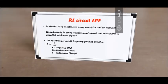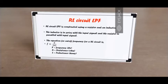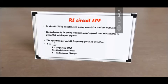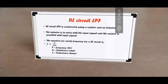An inductive low-pass filter is constructed using a resistor and an inductor. The inductor is in series with the input signal, whereas the resistor is in parallel with the input signal. The cutoff frequency equation is given by F equals R over 2πL, where R is the resistance in ohms, L is the inductance measured in henries, and F is the frequency in hertz.